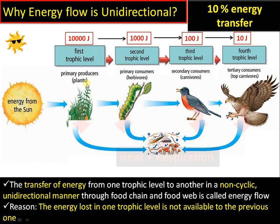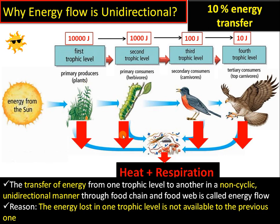The remaining 90% of energy is lost as heat, and organisms also use energy for their respiration. So the majority of energy is lost during energy flow. That is why in a food chain there are only four to five trophic levels, and each step in a food chain is called a trophic level.